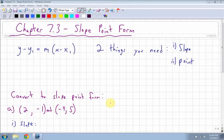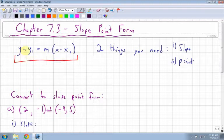Okay, so for section 7.3, slope point form, the equation looks like this. So you have y minus y₁ equals m times x minus x₁, and then you have m, which is the slope.